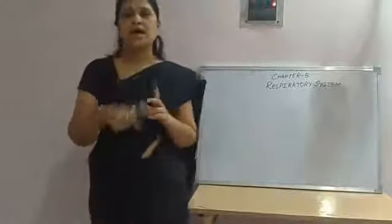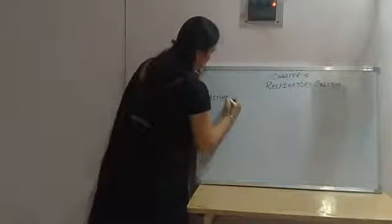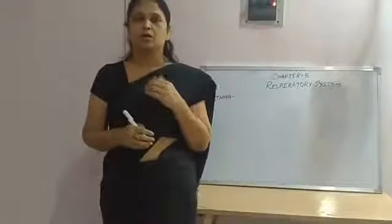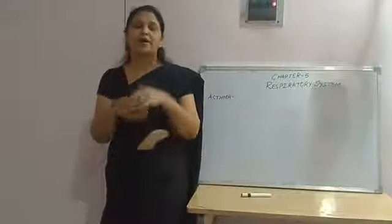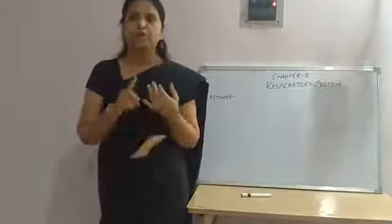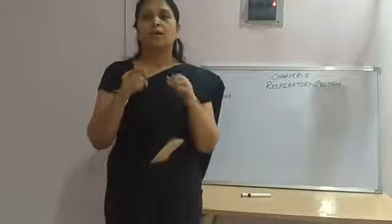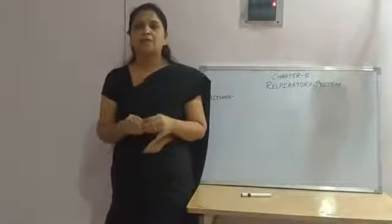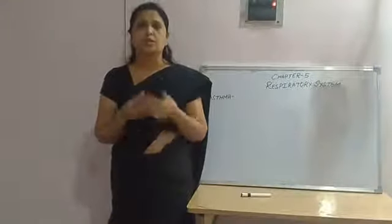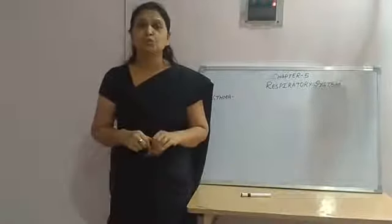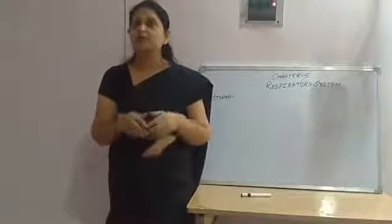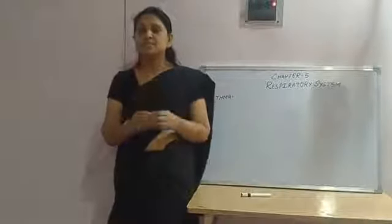The first disease is Asthma. Asthma is a disease caused by the respiratory system — a condition in which a person's airways become inflamed, narrow and swollen, and produce extra mucus, which makes it difficult for a person to breathe. This disease is known as Asthma.